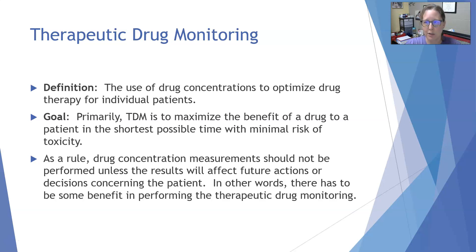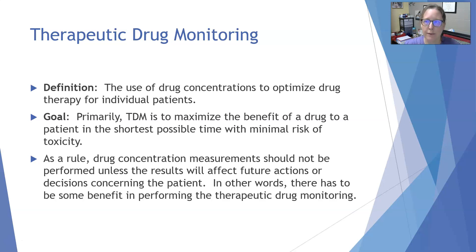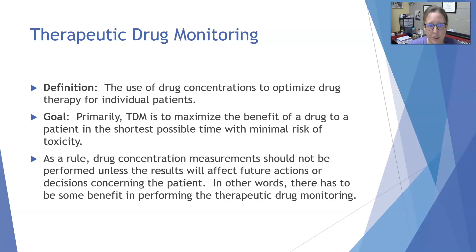We need to check the levels of these drugs in the blood to make sure the dosage for that patient is reaching proper therapeutic levels. One of the reasons these specific drugs are monitored is that there is not a lot of wiggle room — a patient could easily go from therapeutic to toxic if they take too much, or they could not take enough and it could be ineffective. The primary goal of TDM is to maximize the benefit of a drug in the shortest possible time with minimal risk of toxicity.